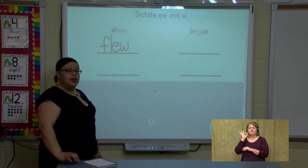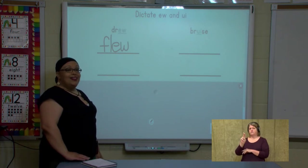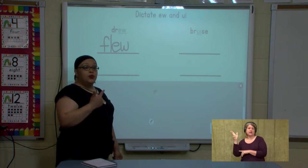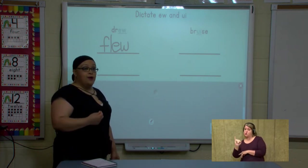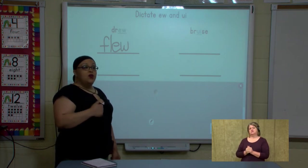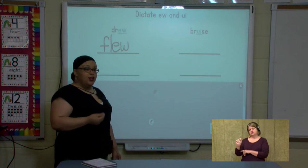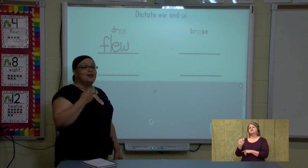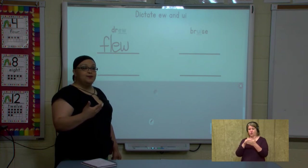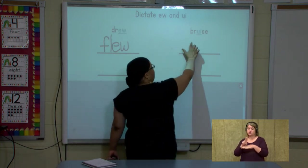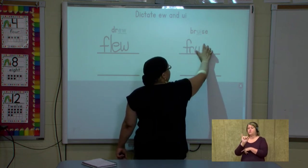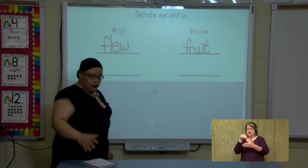Let's do another one — fruit. Say the word fruit. Let's say the sounds we hear in fruit. Where do you hear that oo sound? Say the sounds you hear in fruit — fruit. Where do you hear it? That's right, it's in the middle, it's not at the end. So what sound spelling are we going to use? That's right — U-I. Let's write it: fruit. Since I hear it in the middle, we use U-I.